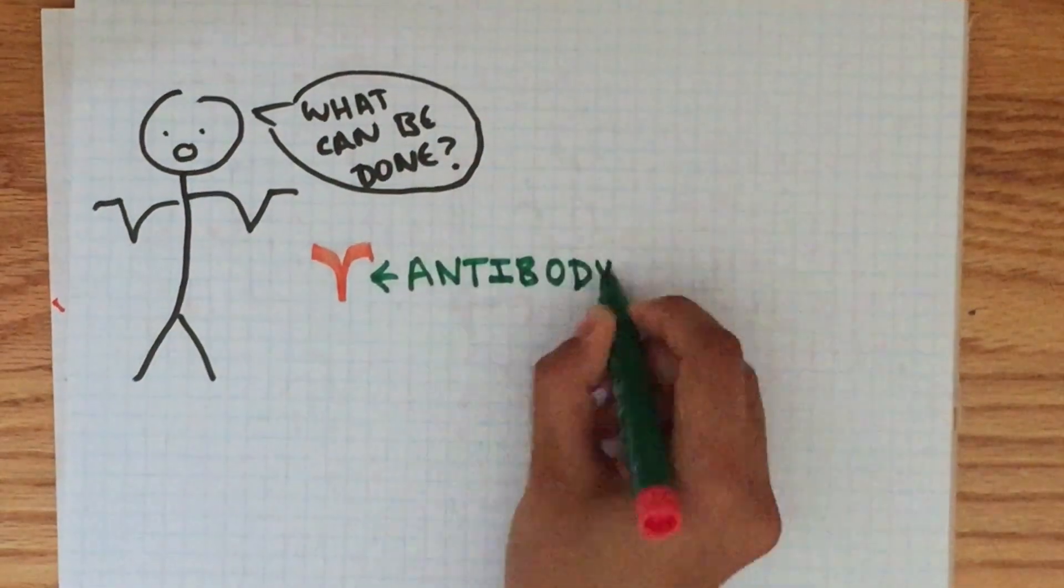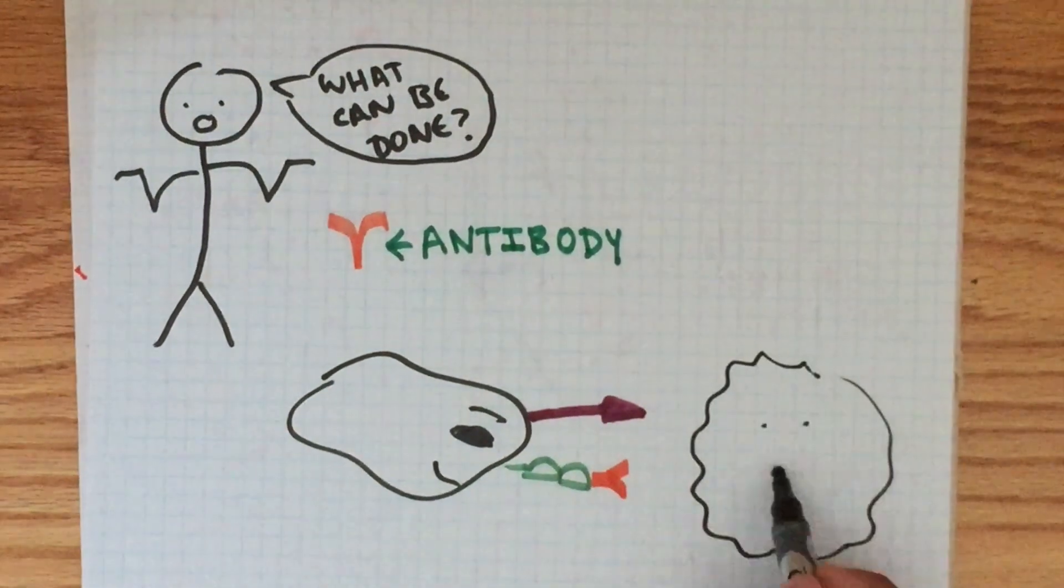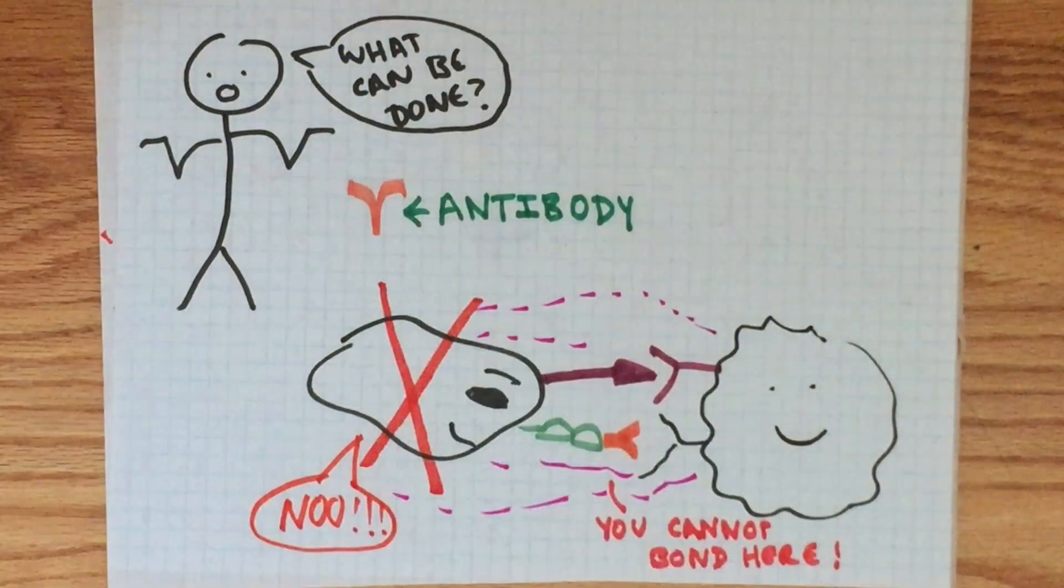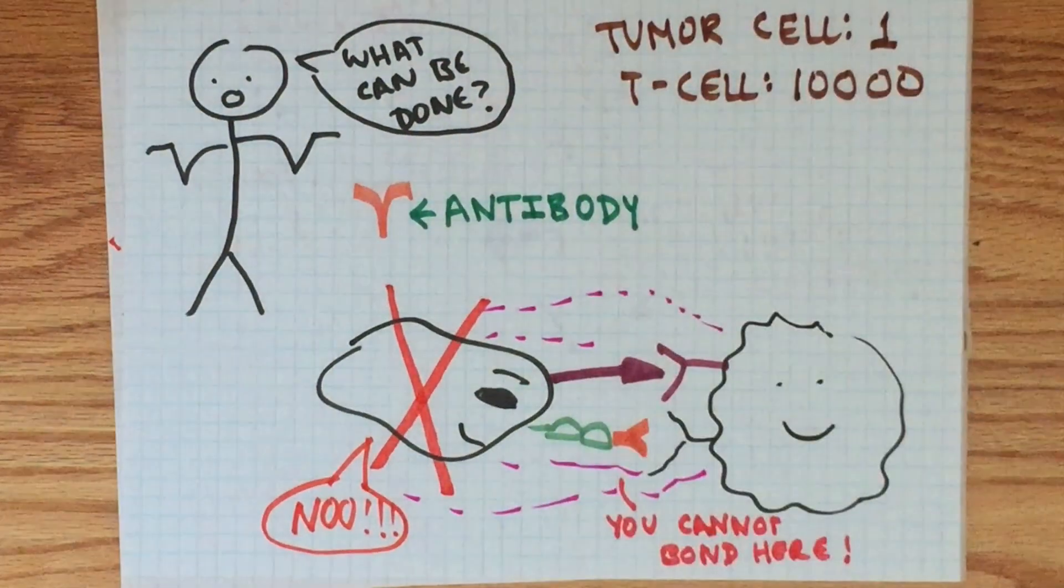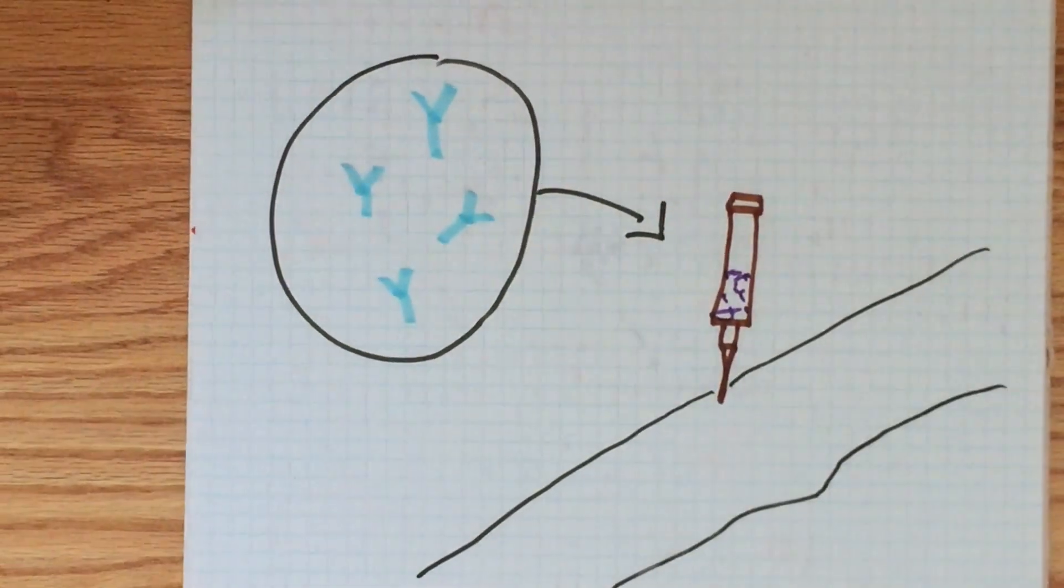There is something that can be done though. Meet the antibody. An antibody is something that neutralizes an antigen by binding to it, making it unable to interact with other cells. As the receptors that trigger T-cell apoptosis are identified, complementary antibodies can be designed in the lab and injected back into the body, stopping the T-cell death from ever happening.